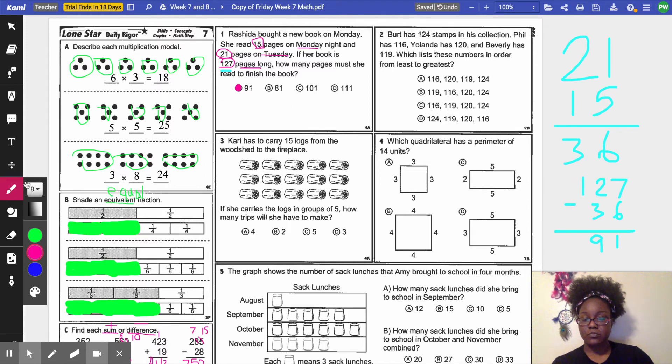And I'm going to move on to number 2. Number 2 says, Bert has 124 stamps in his collection. Phil has 116. Yolanda has 120. And Beverly has 119. Which lists these numbers in order? I don't know what just happened. Like my, I think my internet timed out. Sorry if I was making weird faces. Okay, I'm going to start over. From Yolanda has 120 and Beverly has 119. Which lists these numbers in order from least to greatest? So that means from the smallest to the biggest.